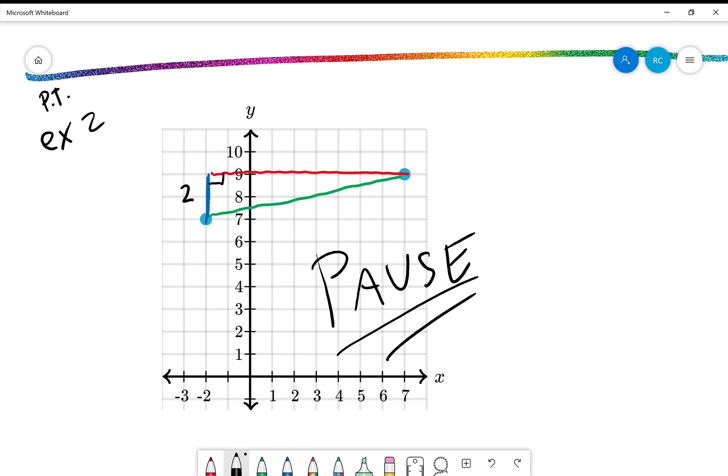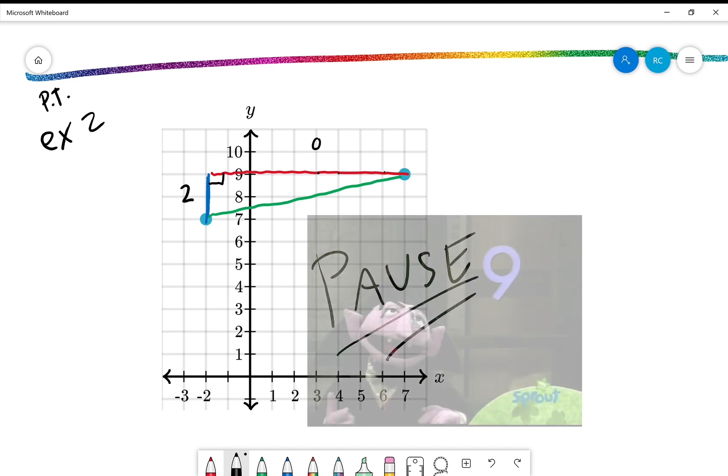The blue side of this right triangle looks like it's two units long. The red side of this triangle looks like it's one, two, three, four, five, six, seven, eight, nine units long.